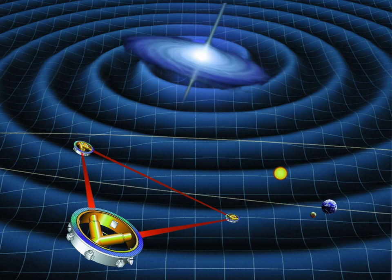LISA will be able to detect the nearly monochromatic gravitational waves emanating from close binaries consisting of two compact stellar objects in the Milky Way. At low frequencies, these are actually expected to be so numerous that they form a source of foreground noise for LISA data analysis. At higher frequencies, LISA is expected to detect and resolve around 25,000 galactic compact binaries.